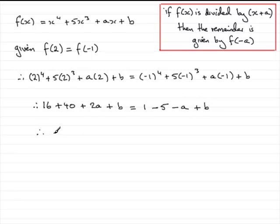And if we tidy the left hand side up, we've got 56 plus 2a. The b's cancel, so if we take b from both sides, that leaves us with minus 4 on the right hand side minus a.